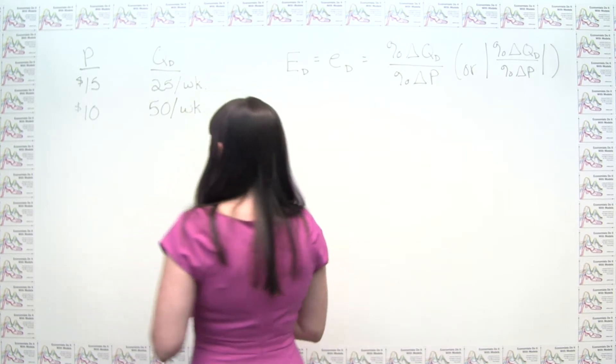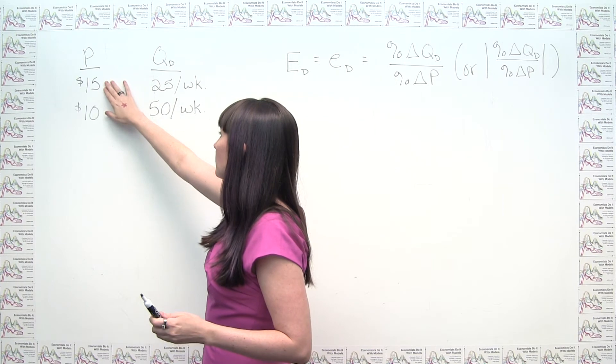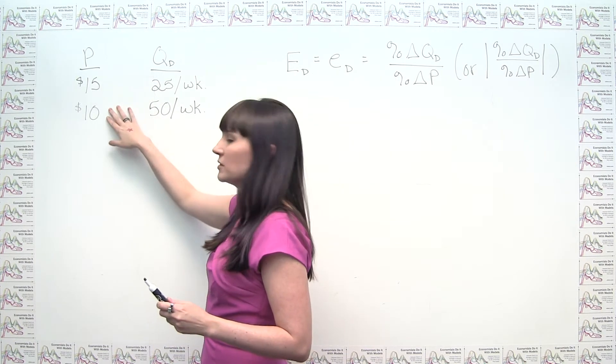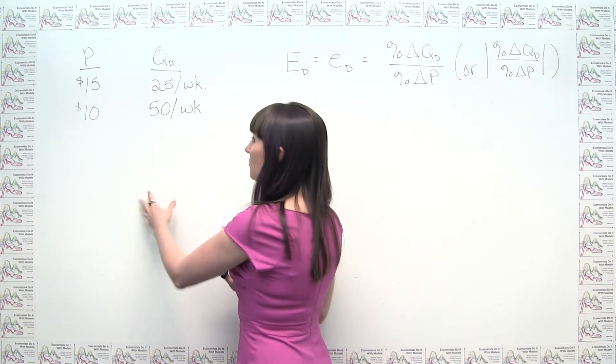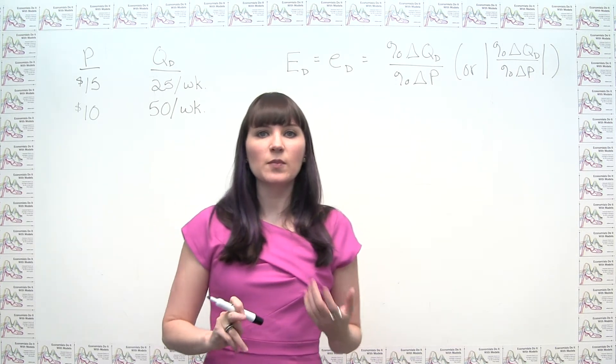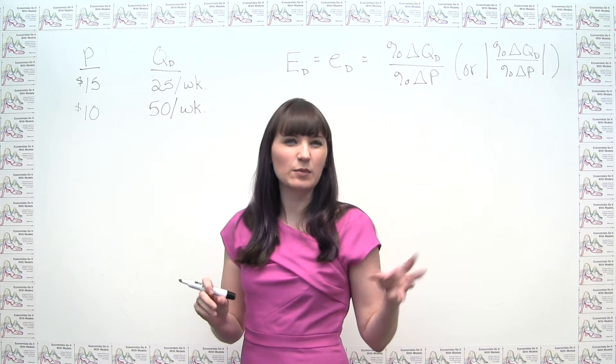Now here, it's pretty easy to see what the percent change would be going from 15 to 10. That's just a decrease of one third, and so on and so forth. But we can also, if we need to, we can explicitly think about the formula for percent change because we need to use that when the numbers aren't so obvious.